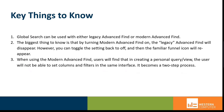There are a couple of key things you should know. Global Search can be used with either Legacy Advanced Find or Modern Advanced Find. When you turn on Modern Advanced Find, the Legacy Advanced Find functionality goes away, but you can toggle between the two as you're getting used to it. When using Modern Advanced Find, users creating a personal view will find it's a two-step process — first setting the filters, then setting columns and other options.